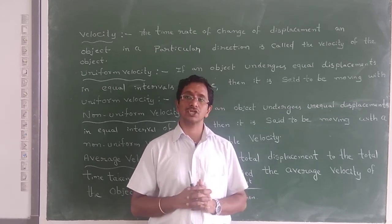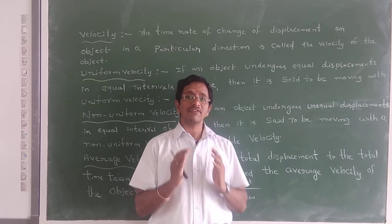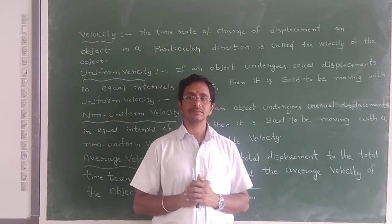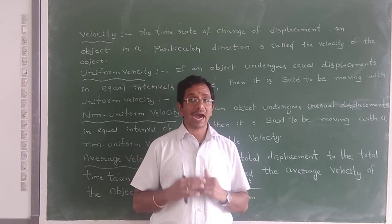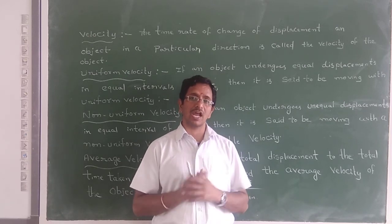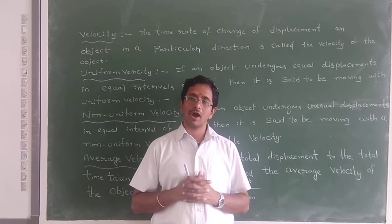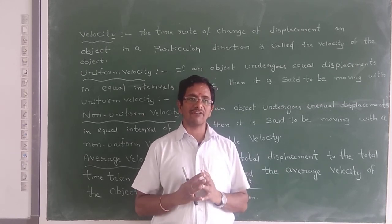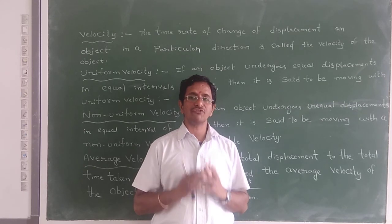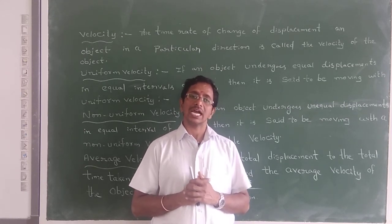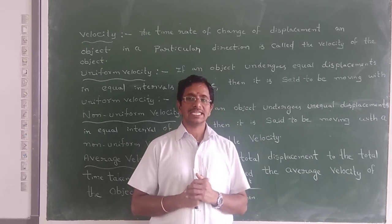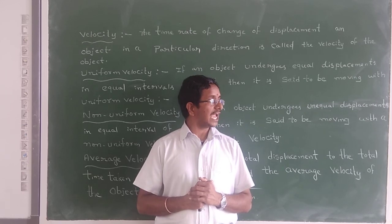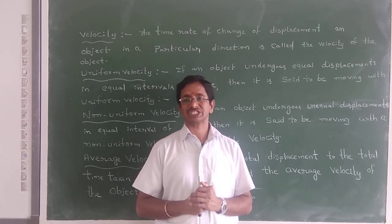Non-Uniform Acceleration: An object is said to be moving with non-uniform acceleration or variable acceleration if its velocity changes by unequal amounts in equal intervals of time. Average Acceleration: If a body travels with accelerations a1 and a2 in times t1 and t2, then the average acceleration is av equals (a1·t1 + a2·t2) divided by (t1 + t2).